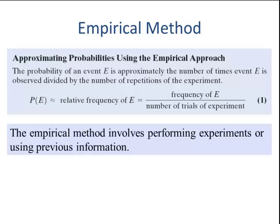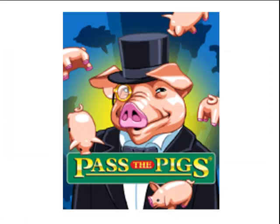Estimating probability using the empirical method is simply the relative frequency of that event. You take the frequency of the event and divide it by the total number of trials in the experiment. The empirical method involves performing experiments or using previous information. Let's look at an example.